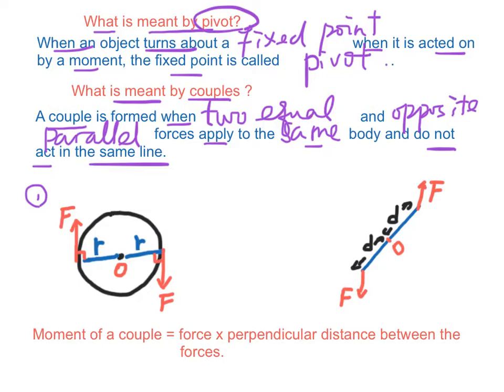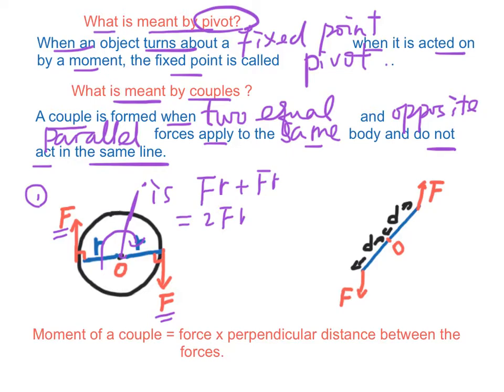For example, we have two equal forces F acting in opposite directions and they are parallel. The moment of the force about point O is equal to F times R plus F times R, which is clockwise moment. And the total moment is equal to 2F times R, which is equal to F times 2R, equal to F times D, where D is the distance between these forces.